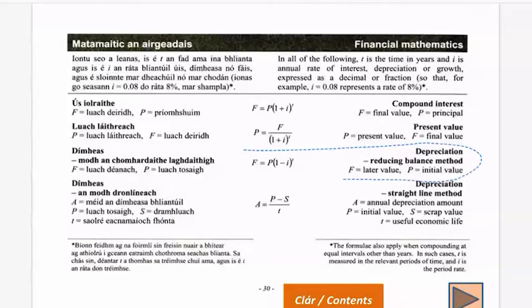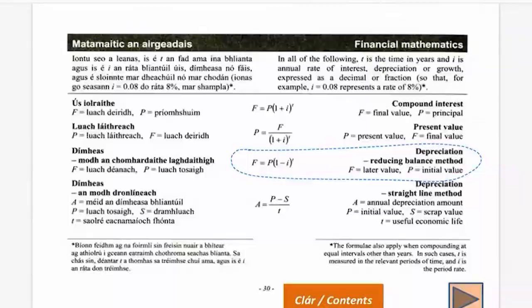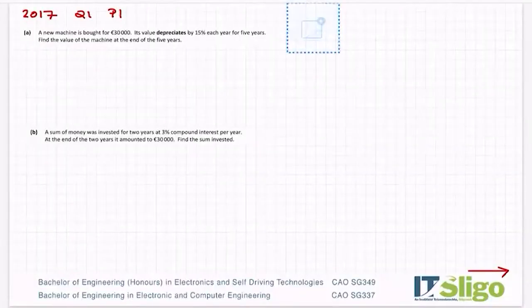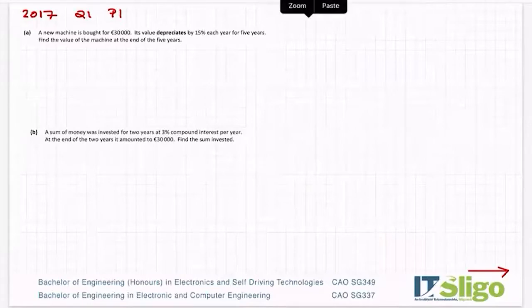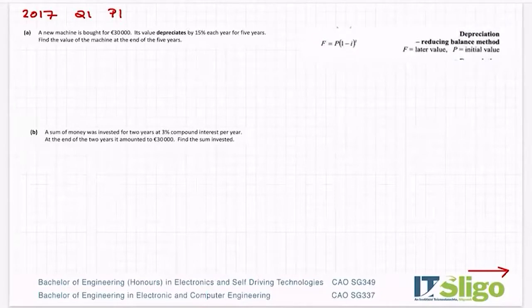So that is the formula that you need. That's our depreciation formula, sub h 30 of the log tables. So the formula says that F is the later value or the final value, and P is what we call the initial value or principal. So F is the final value, P is the initial value. So our P in this case will be €30,000.